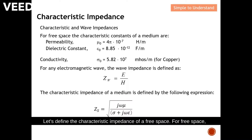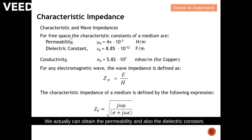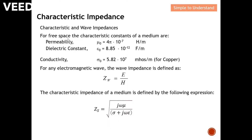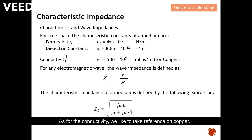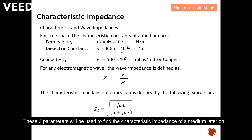Let's define the characteristic impedance of free space. For free space, the characteristic impedance constants of the medium are shown here. We can obtain the permeability and also the dielectric constant. The permeability of free space is equal to 4π times 10 to the power of minus 7. As for the conductivity, we take reference from copper — the conductivity for copper is equal to 5.82 times 10 to the power of 7. These three parameters will be used to find the characteristic impedance of a medium.